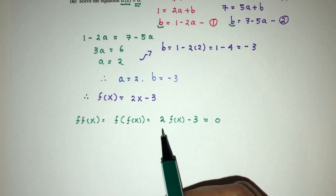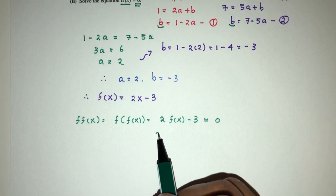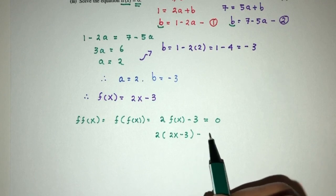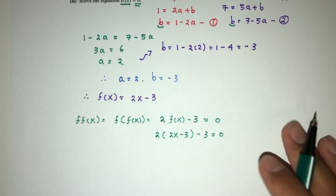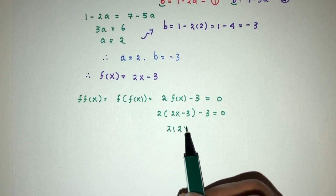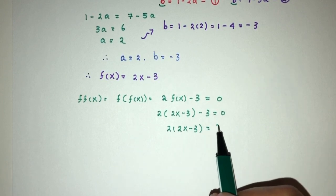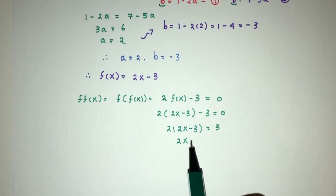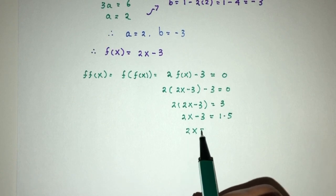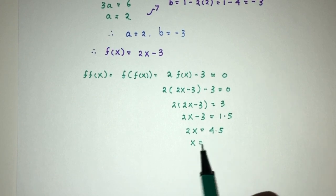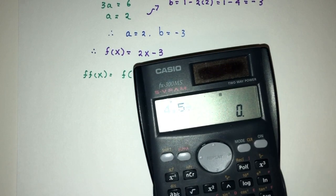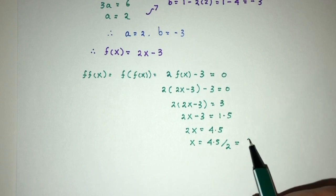Let's solve. So here we have 2 times f(x), which was seen to be 2x minus 3, minus 3 equal to 0. So let's try to simplify this. So you have 2x, so 2 times 2x minus 3. We'll send this over here, becomes 3, and you will have 2x minus 3, that will be 1.5. Now 2x, that will be 4.5. x has to be 4.5 divided by 2. That will be 2.25.